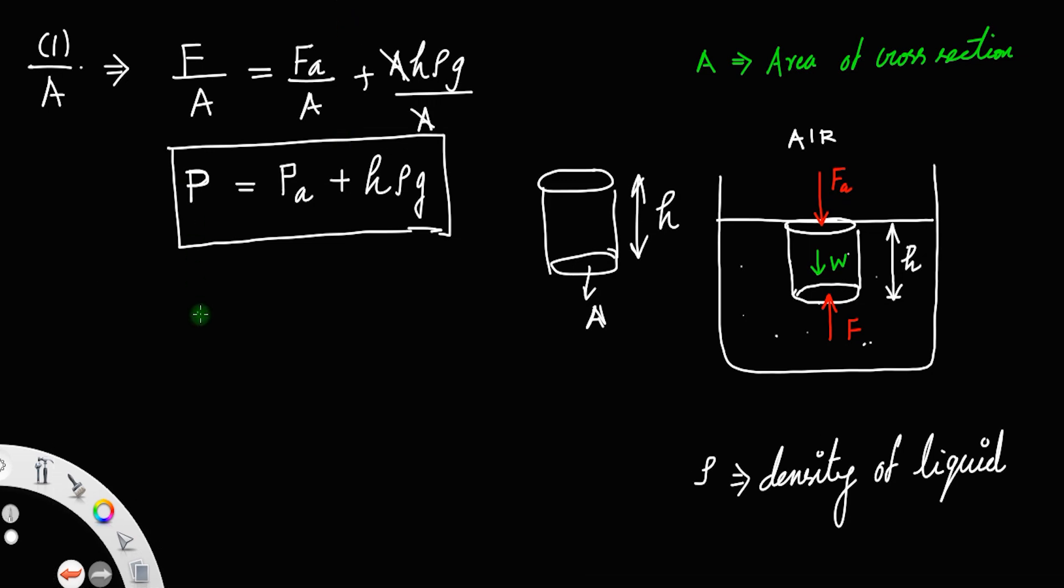From this equation, it is clear that pressure at a depth is directly proportional to the depth of the liquid column. Since density and gravity remain constant, pressure is directly proportional to depth h.